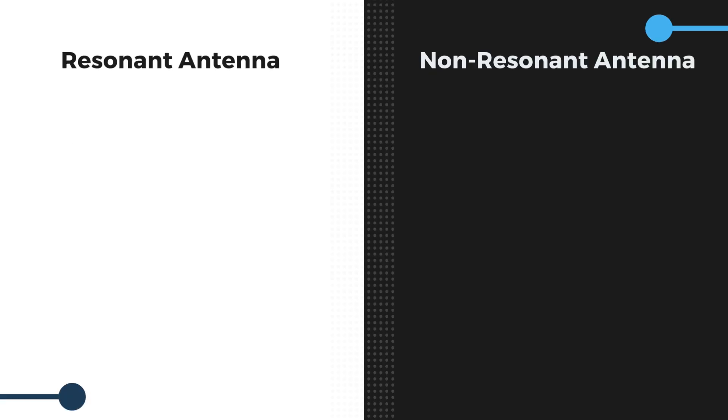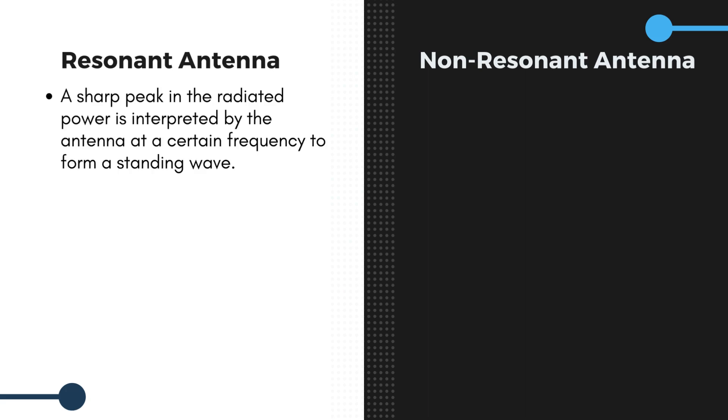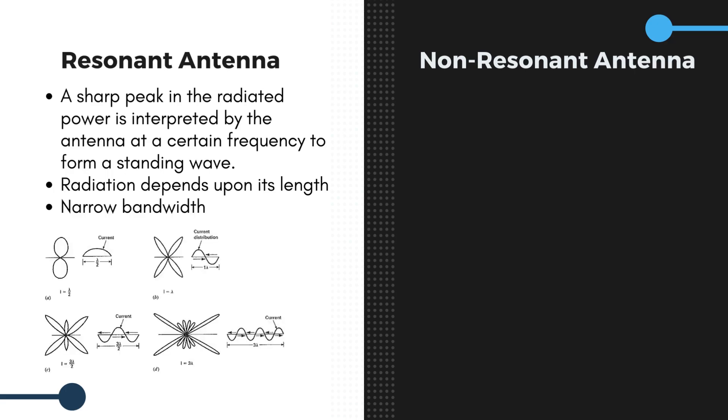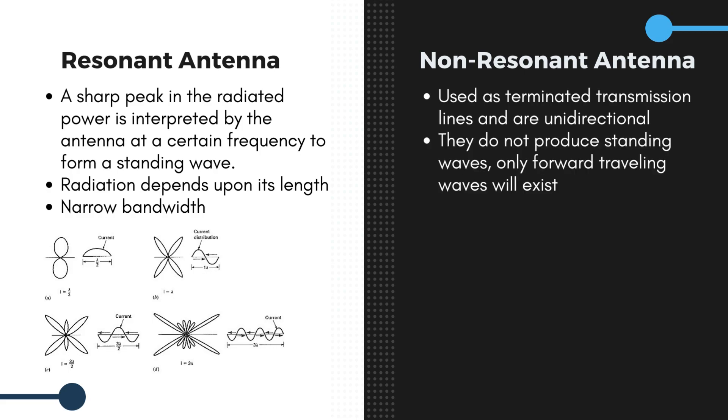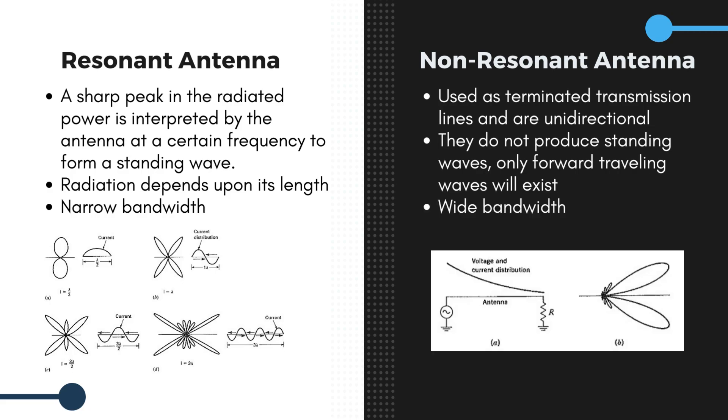Now there are two categories of antenna: resonant and non-resonant antennas. Resonant antennas are those for which a sharp peak in the radiated power is interpreted by the antenna at a certain frequency to form a standing wave. The radiation pattern of the wire radiator in free space depends on its length and it has a very narrow bandwidth, whereas non-resonant antennas are used as terminated transmission lines. They do not produce standing waves, only forward travelling waves will exist and they are unidirectional. The standing waves exist in resonant antennas caused by the presence of both reflected travelling waves and forward travelling waves.